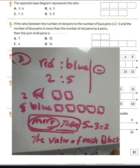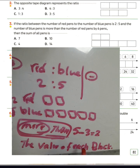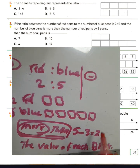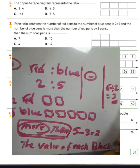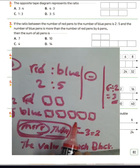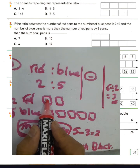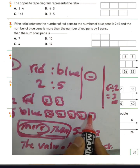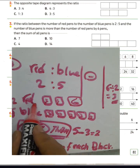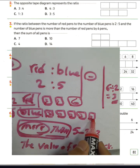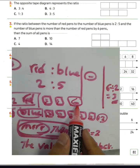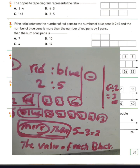We find the value of each block by dividing the difference: 6 divided by 2 equals 3. So each block equals 3. That gives 3 plus 3 equals 6 red beans. For blue beans: 4 times 3 equals 12. Then we have 6 red and 12 blue.